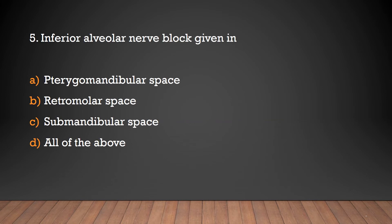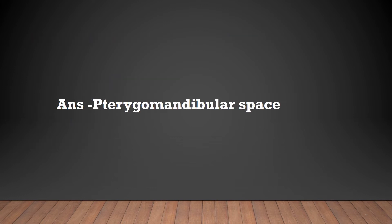Inferior alveolar nerve block is given in: Pterygomandibular space, Retromolar space, Submandibular space, or All of the above? Answer: Pterygomandibular space.